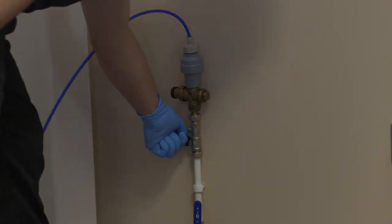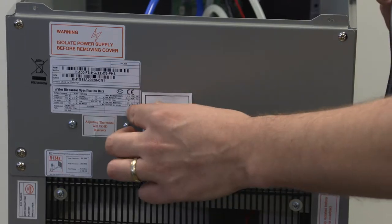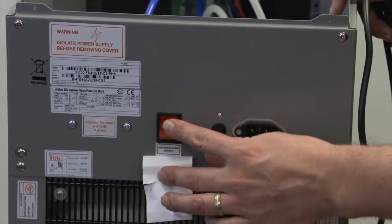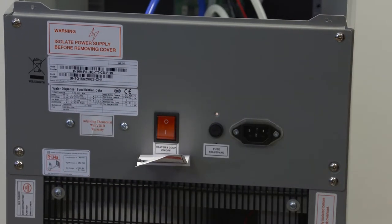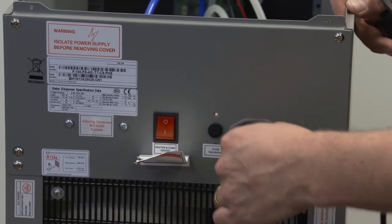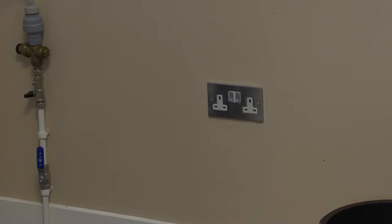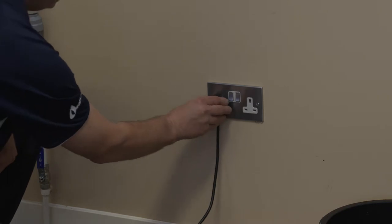The water supply can now be turned on. Ensure the heater compressor switch is in the off position. Connect the electrical power supply at the rear of the machine, insert the plug and turn on the mains power.